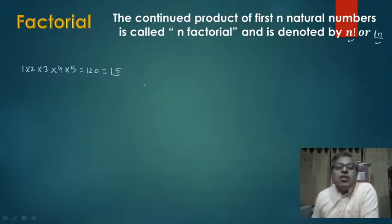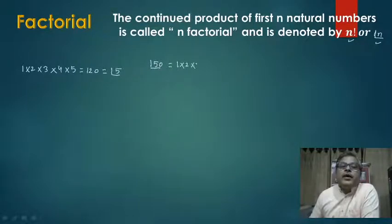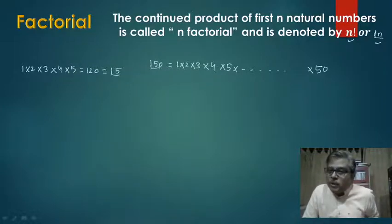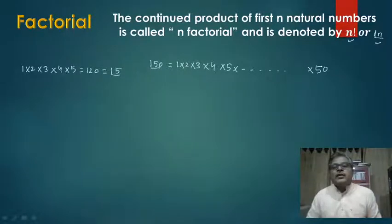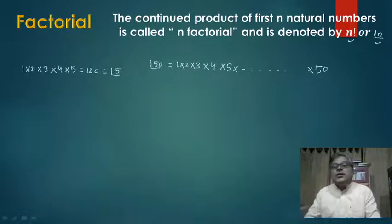अब मेरा काम आसान हो गया। जैसे आपको कहा गया कि 1 से लेके 50 तक के natural numbers को multiply करना है, तो इसका मतलब answer होगा factorial 50. Factorial 50 का मतलब है 1 × 2 × 3 × 4 × 5 and so on up to 50. हम 1 से 50 तक के numbers को multiply करने की बजाए simply factorial 50 लिख देंगे — इससे हमारा काम आसान हो गया।